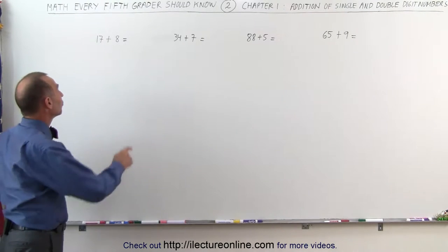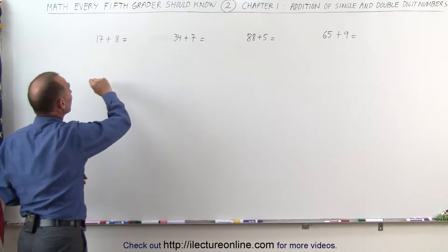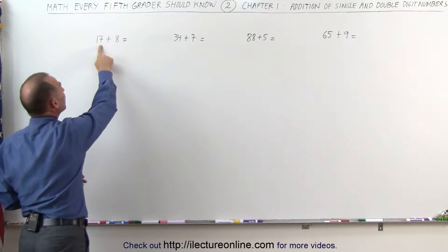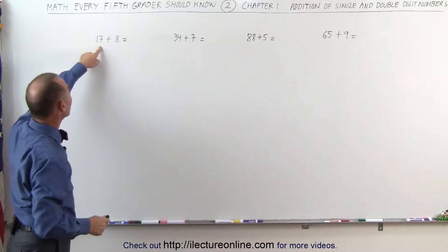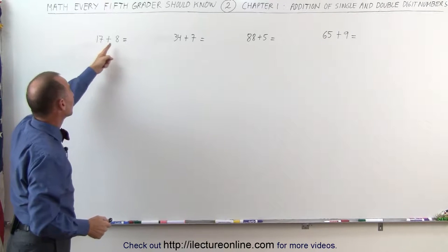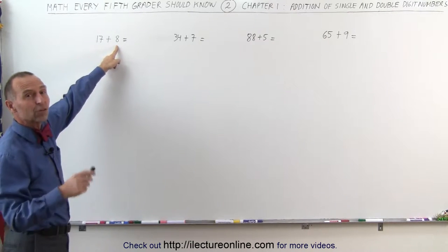The best way to do that is to look at 17, the bigger of the two numbers, and see how much more we need to make 20. If we add 3 more to 17, we get 20. If we subtract the 3 from 8, that leaves us with 5.